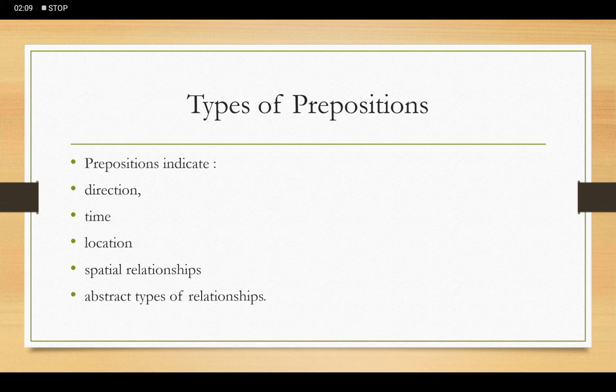So these are the different types of prepositions which show or indicate in a sentence about the directions, about time factor, the location of the place, about the space, or abstract type of relationships.